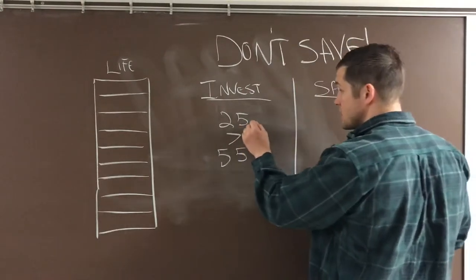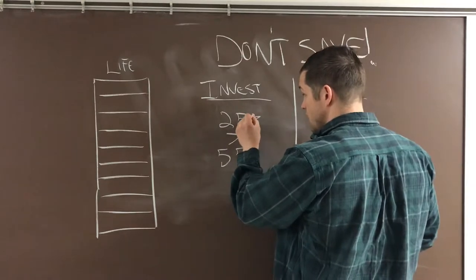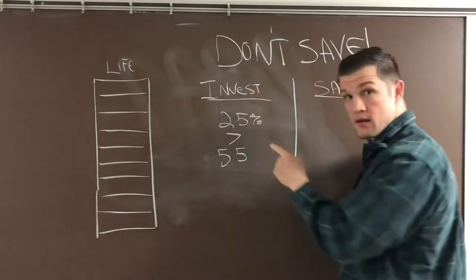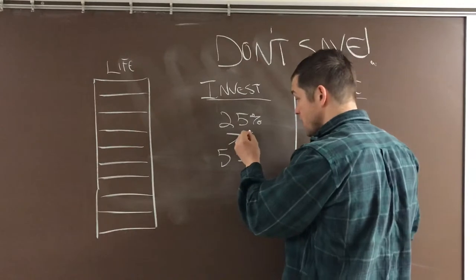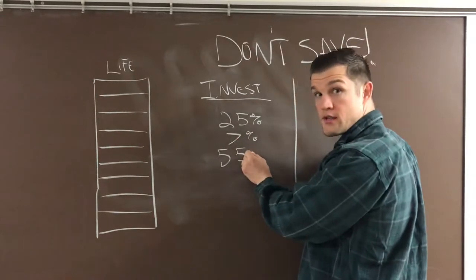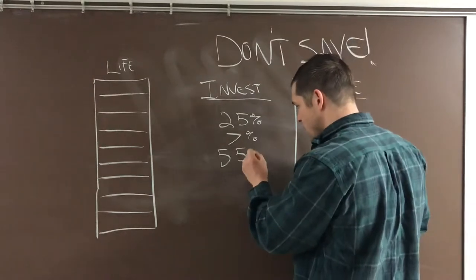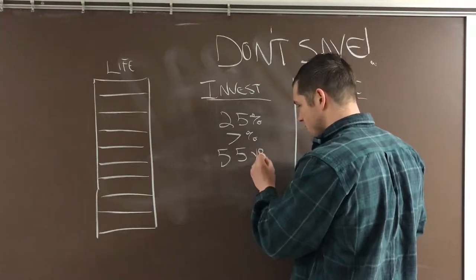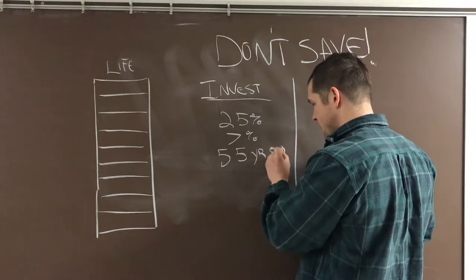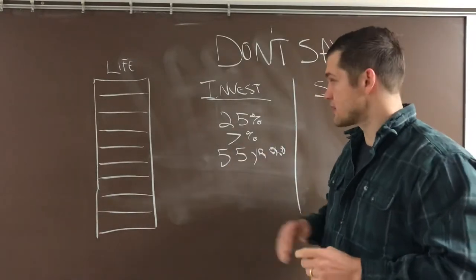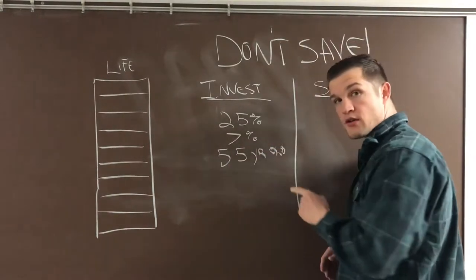So this is going to be 25% invested at a 7% return. And this means that you'll be able to retire forever when you're 55 years old. It doesn't actually matter the salary, but this math will always work out.